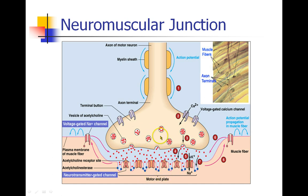Here we have vesicles filled with acetylcholine at the axon terminal of the neuron. As the action potential comes down the membrane, calcium rushes in, causing acetylcholine to be released into the neuromuscular junction. On the motor end plate of the muscle cell are acetylcholine receptors, and when acetylcholine binds to these receptors, it causes the motor end plate to generate a potential.